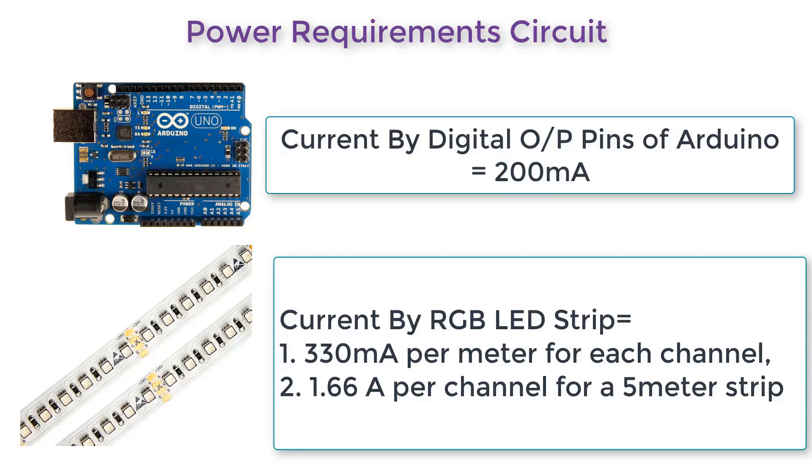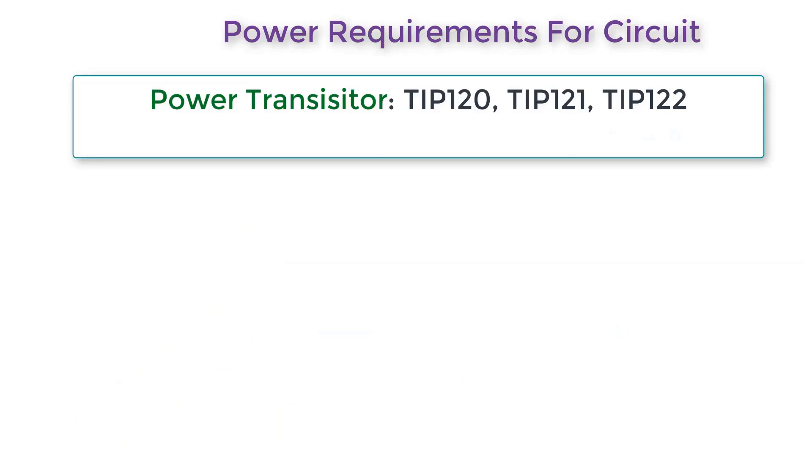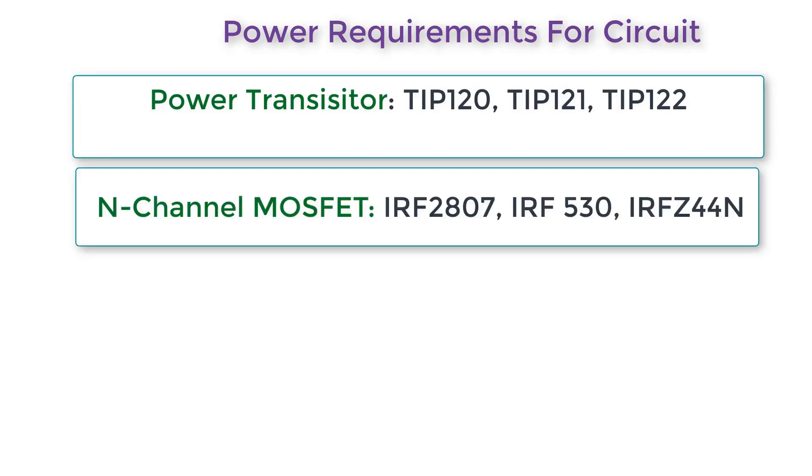We have a few solutions here. We need to use a power transistor of TIP 120, TIP 121, or TIP 122, or use an N-channel MOSFET called IRF 2807, IRF 530, or IRF Z44. This will amplify the current.